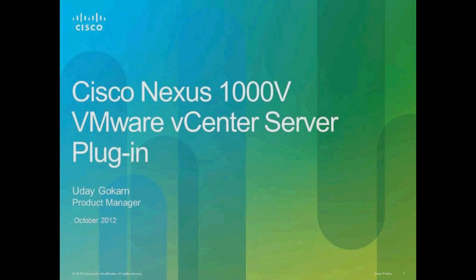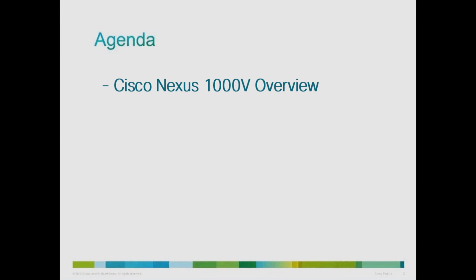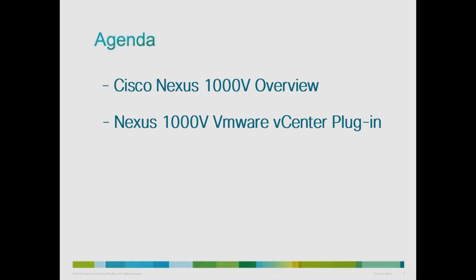This vCenter plugin will be available with the 2.1 release of Nexus 1000v, which is expected in Q4CY12. The vCenter plugin is a simple way for the administrator to gain visibility into the virtual networking aspects. The plugin helps provide essential information pertaining to the virtual network so that the administrator can root cause issues and prevent them. The plugin also helps the admin deploy VMs with the best suited policies to optimize resources in the datacenter. It uses the vCenter GUI interface so integrating the app in your datacenter will be seamless. We will do a quick overview of the Nexus 1000v, then talk about the vCenter plugin in more detail, followed by resources for additional information.